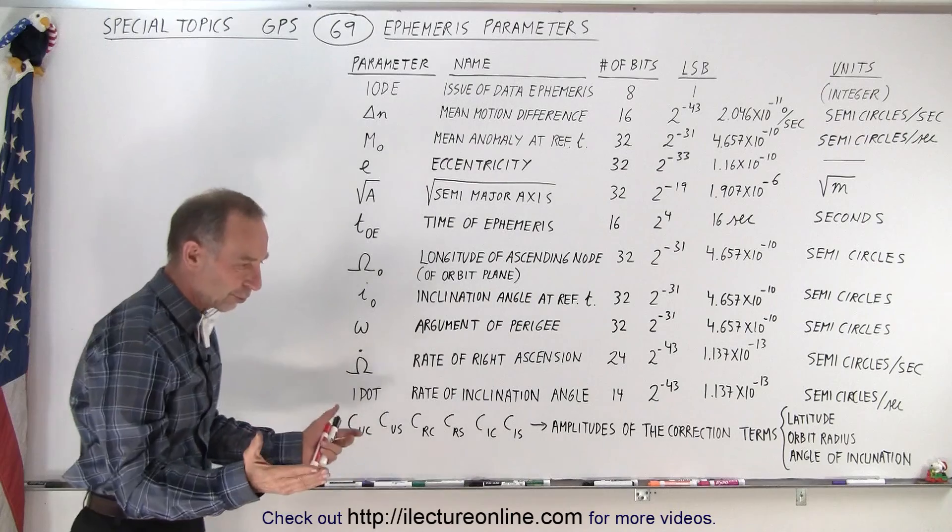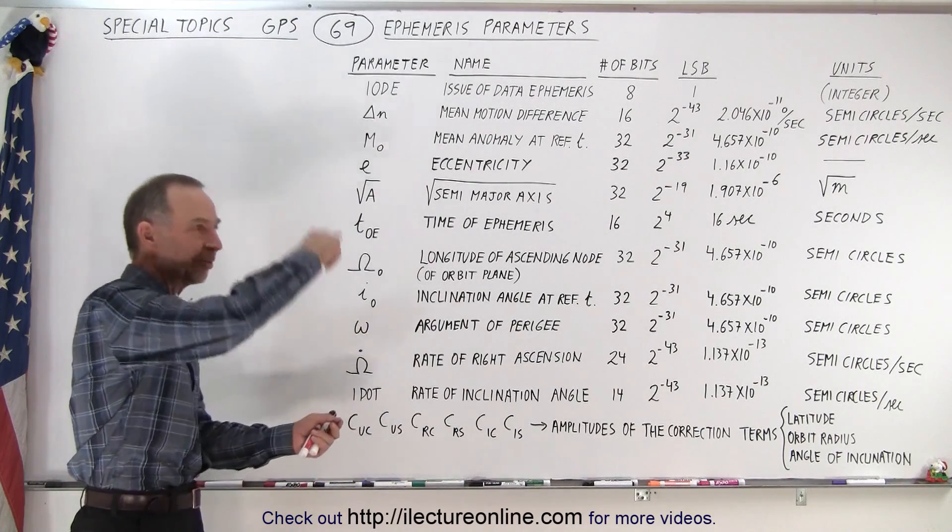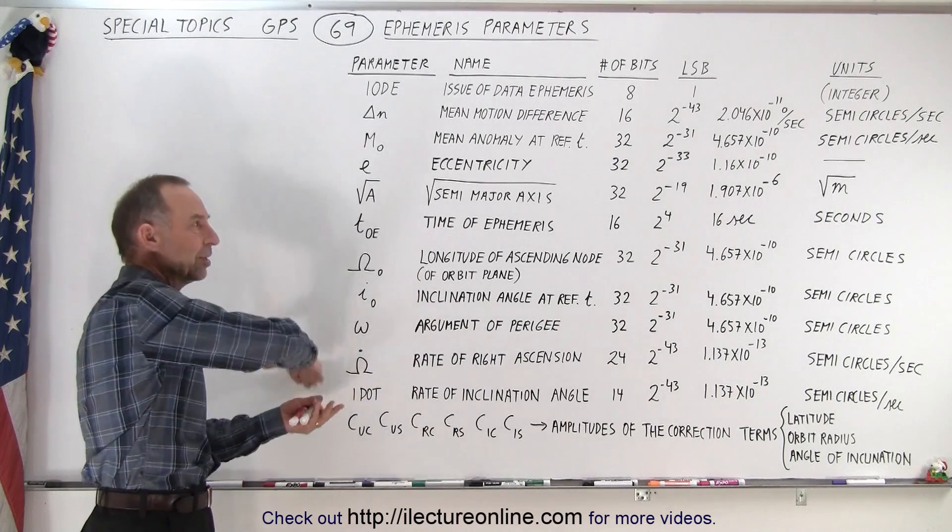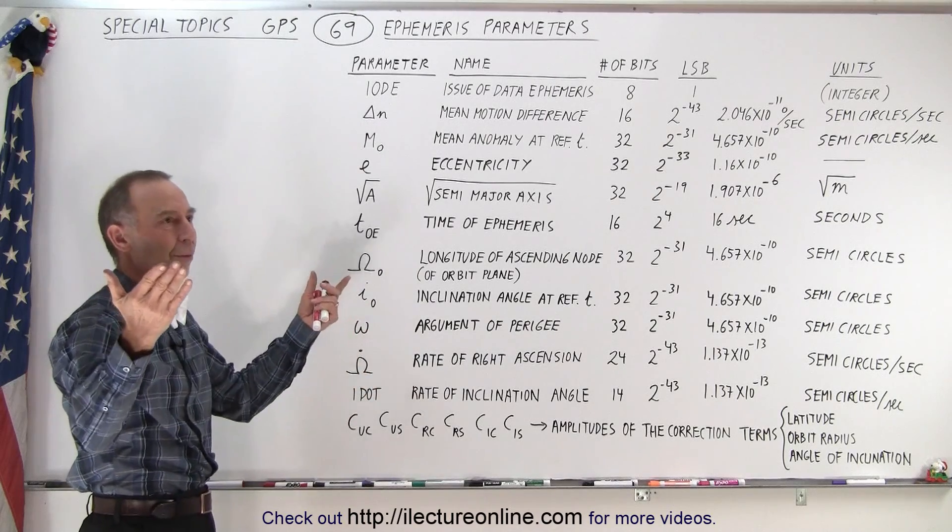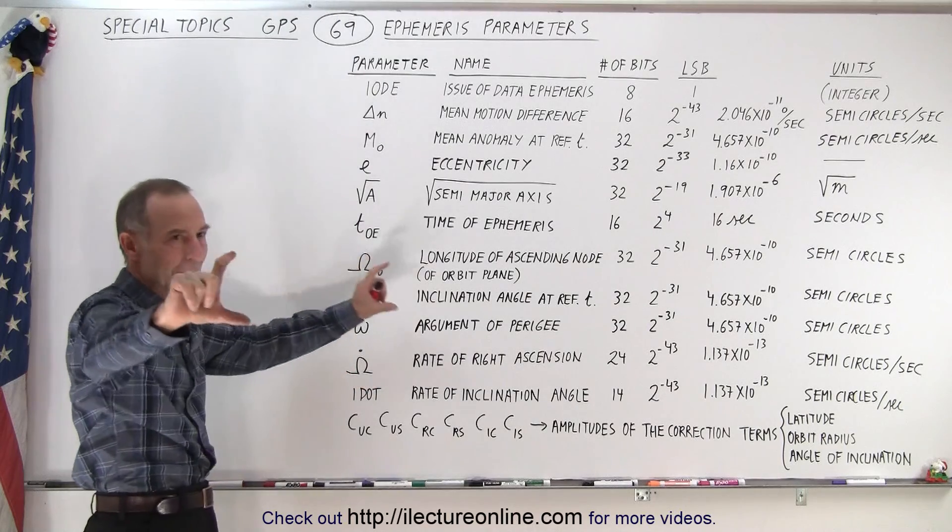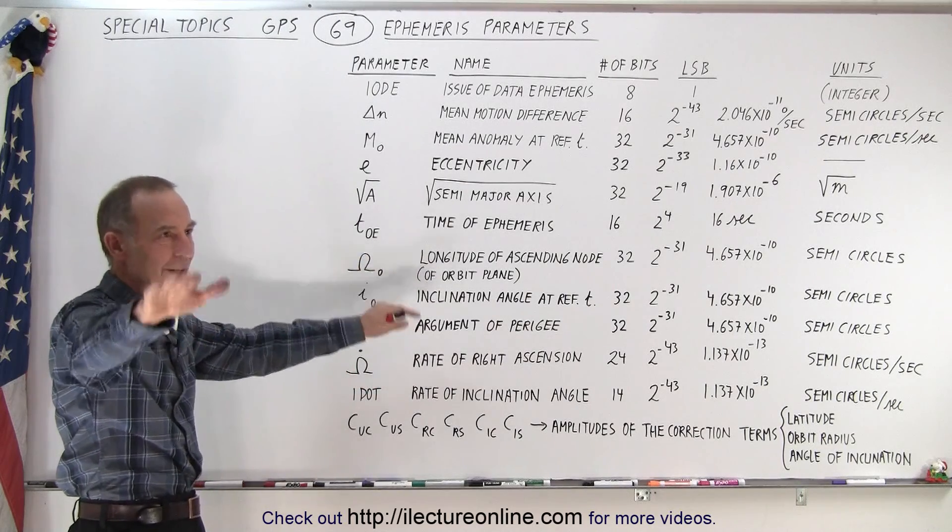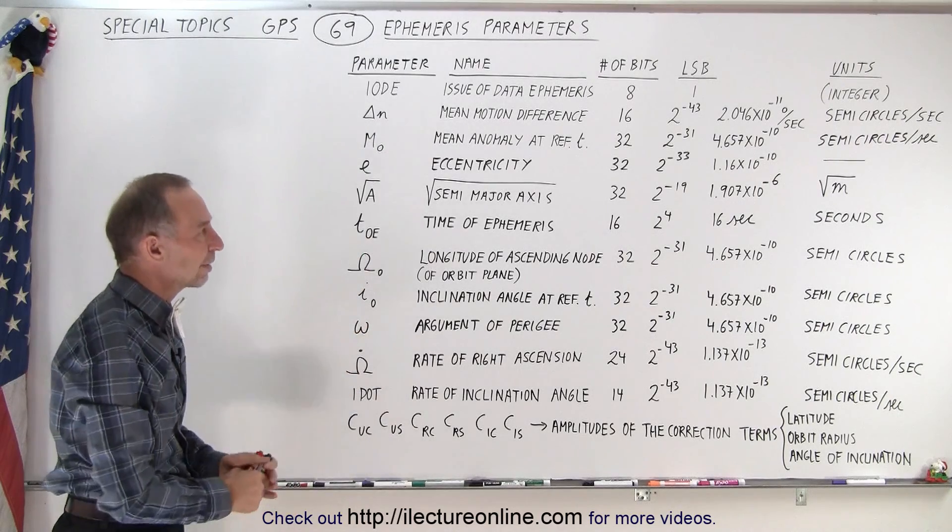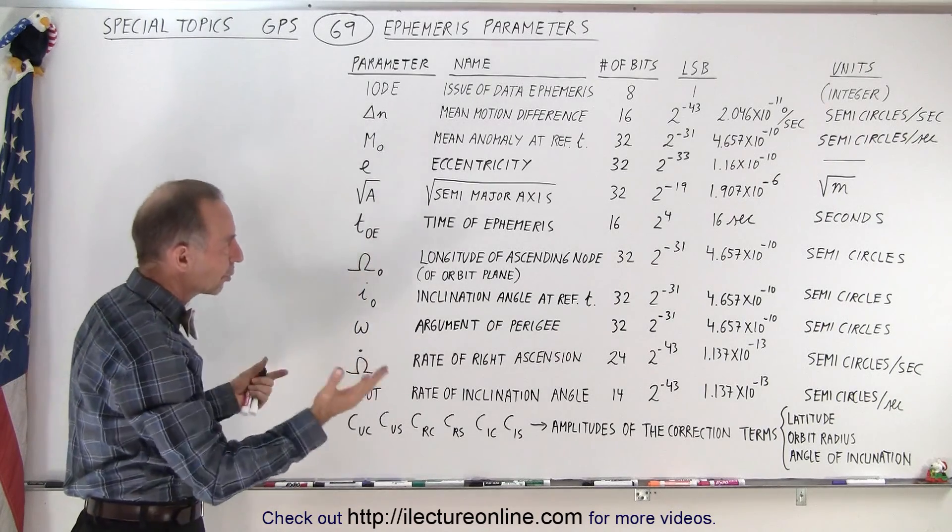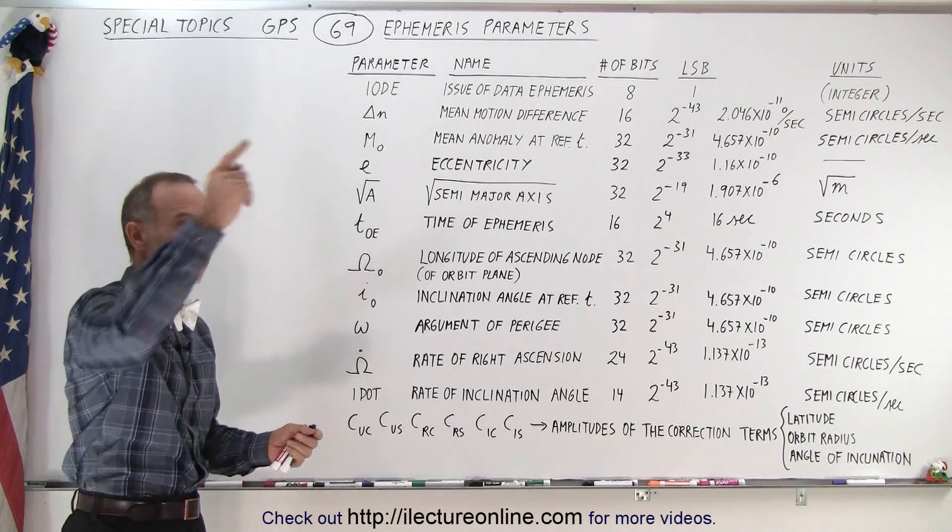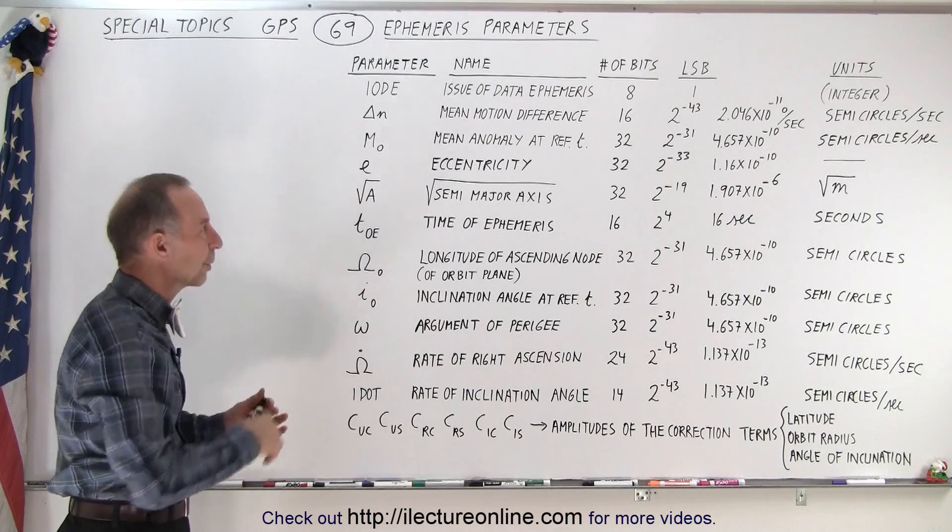You'll see a lot of the units is semicircles per second. The semicircle of course represents a half orbit, essentially a half orbit is the half that a receiver could pick up when the satellite is visible. Although typically satellites aren't picked up until you're about 5 or 10 degrees above the horizon.